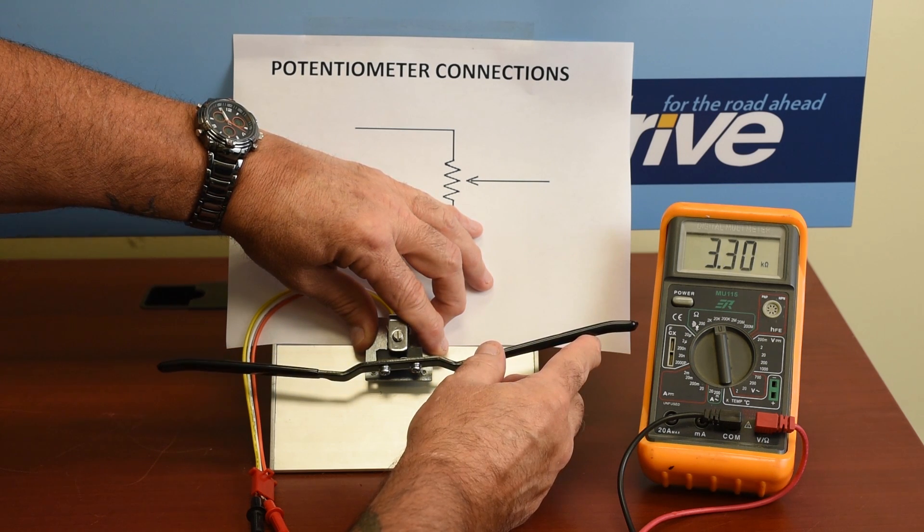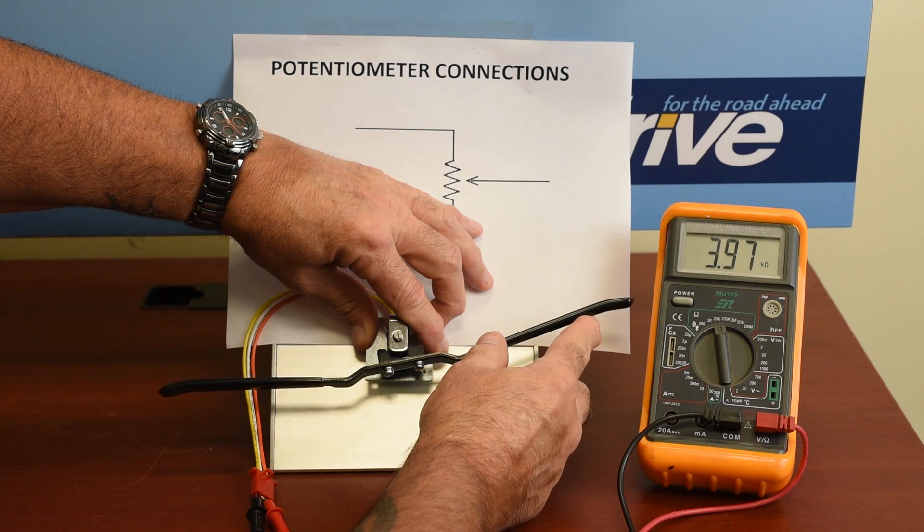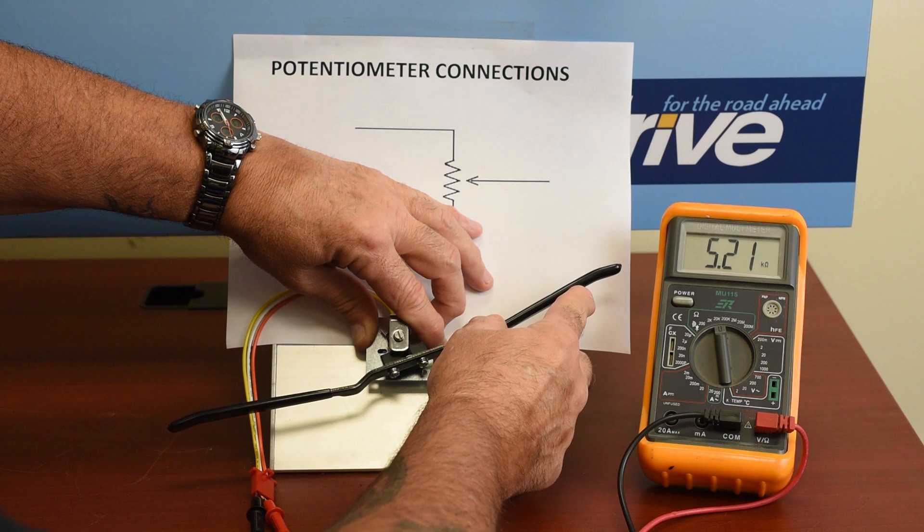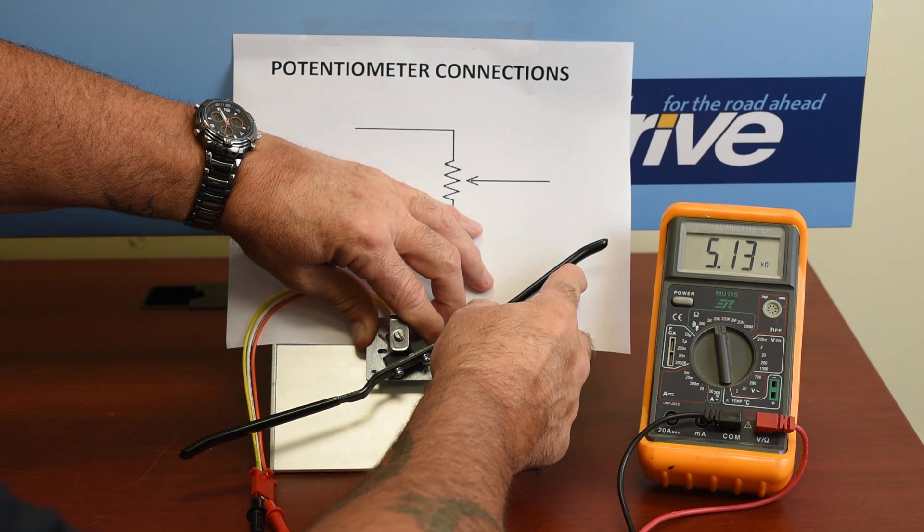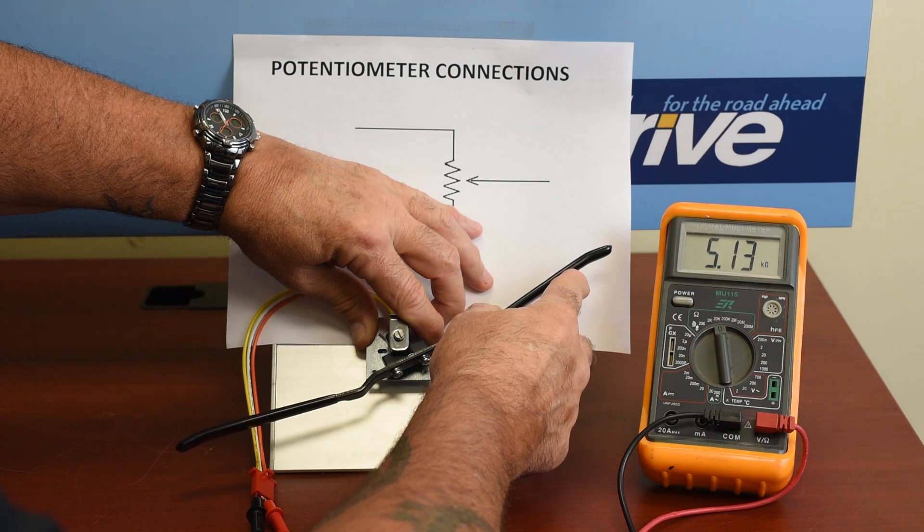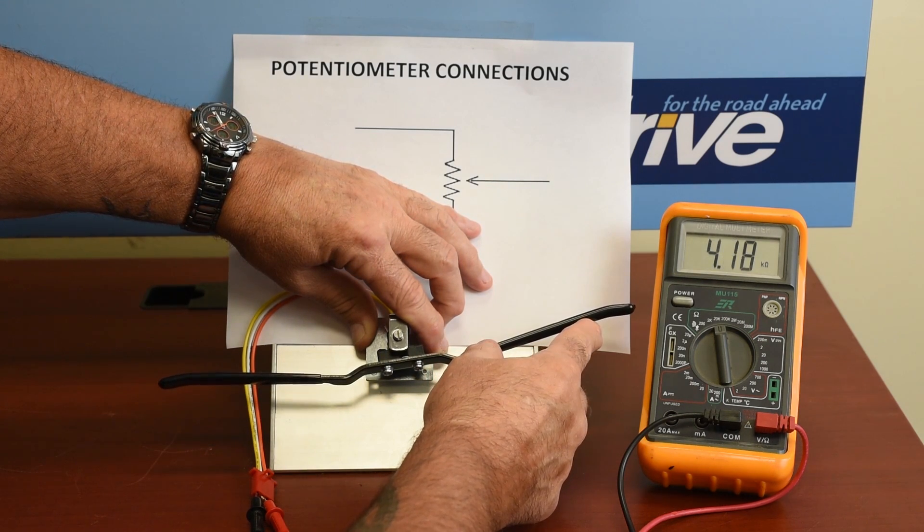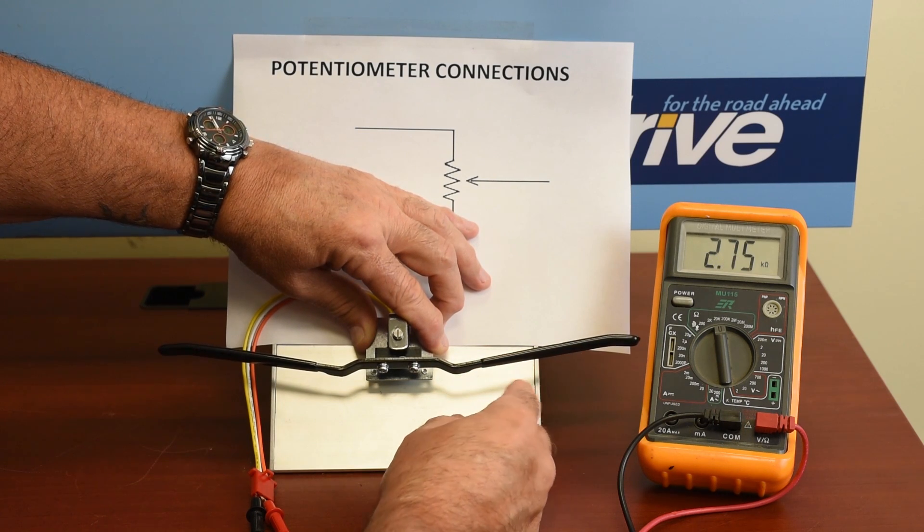As you see, it's climbing nice and slowly. There's no dropouts, and we don't have any shorts. If it was a short, it would immediately drop to zero. And we're almost at full range. There we are. And then we slowly go back, and we should end up with what we started.